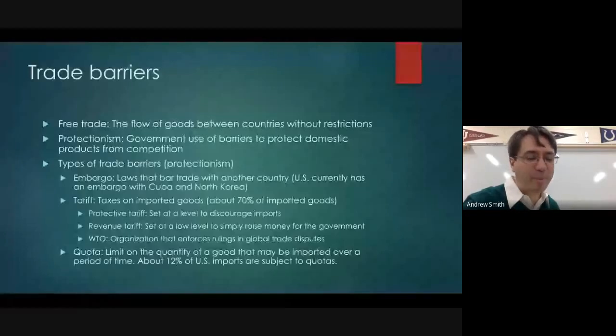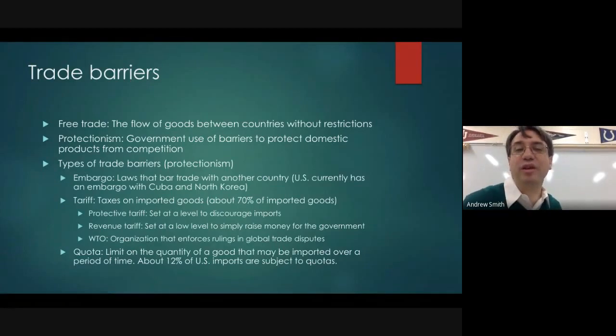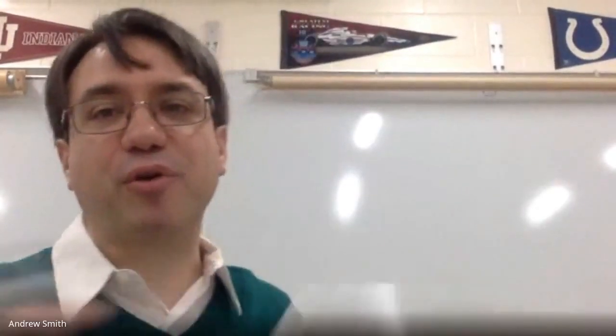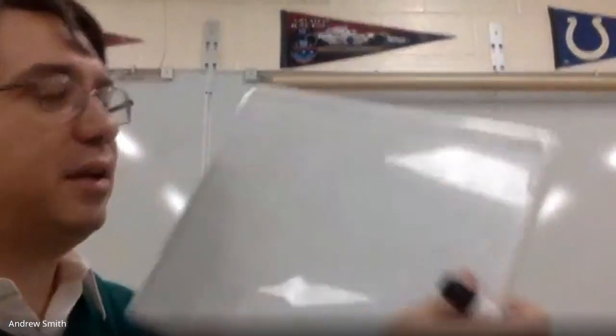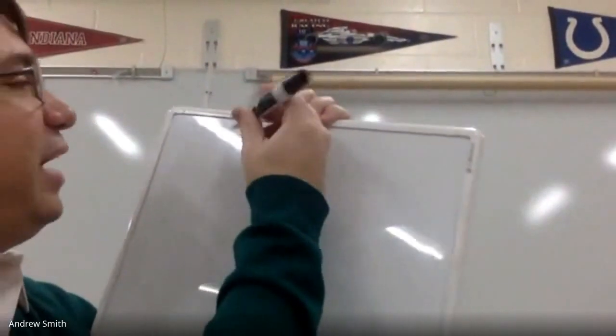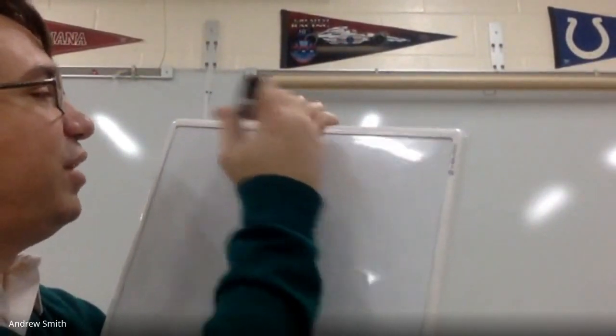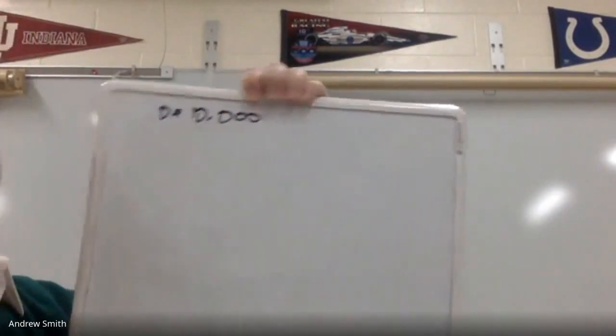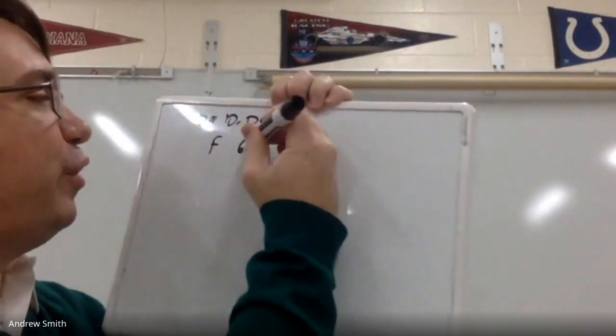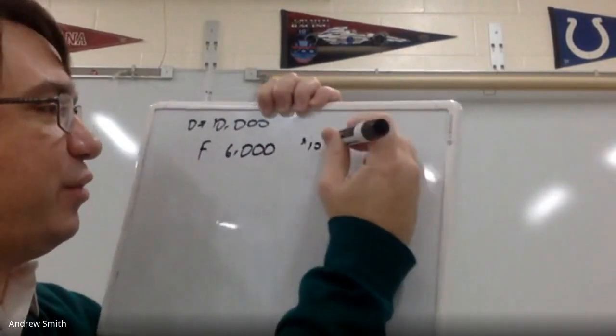The second concept is the quota — a hard limit on imports. About 12% of U.S. imports are subject to quotas. It's a hard limit on the quantity of a good that can be imported in a given year. Let's say there is a demand for 10,000 cars in a given year. Ford is able to produce 6,000 cars and sells them at $10,000 each.